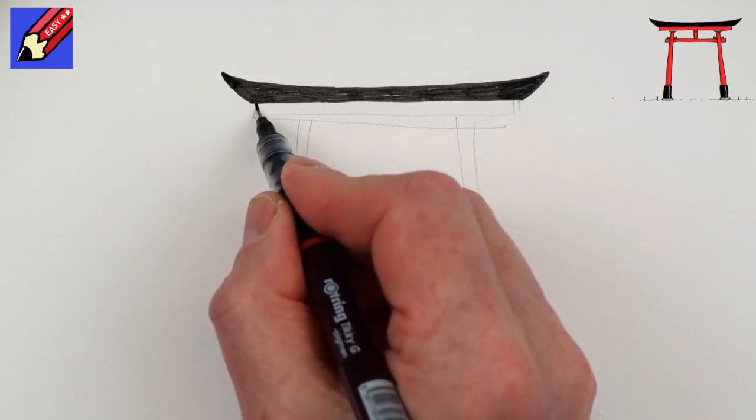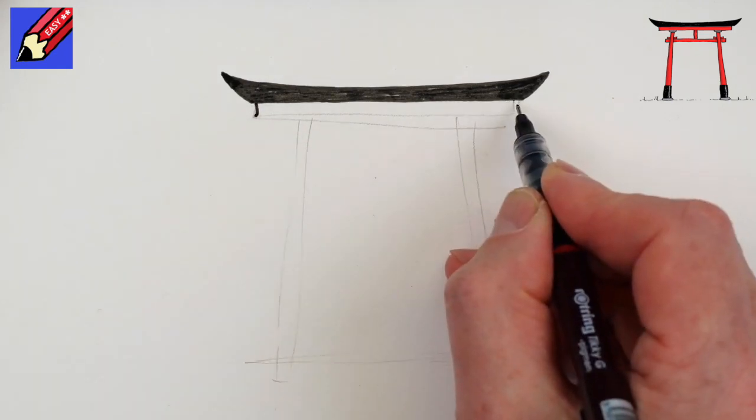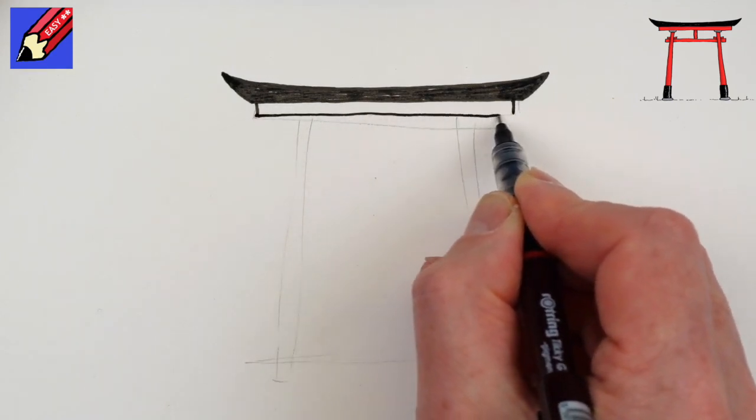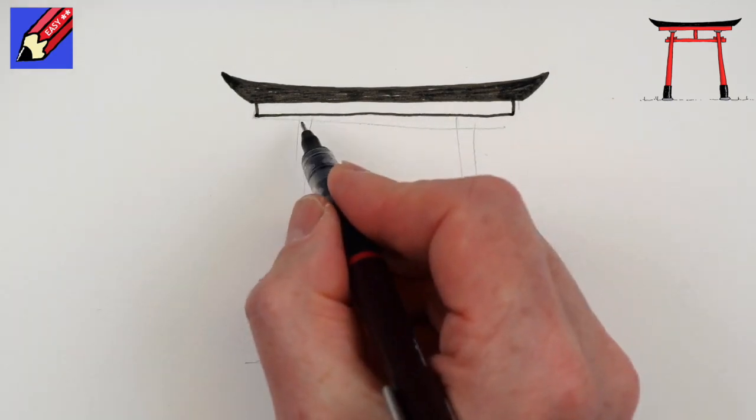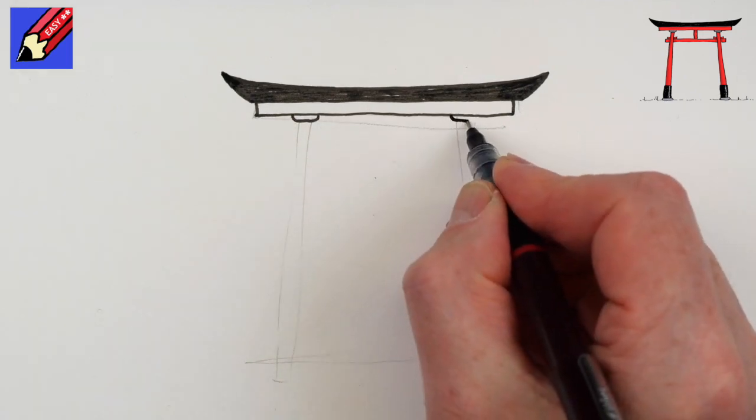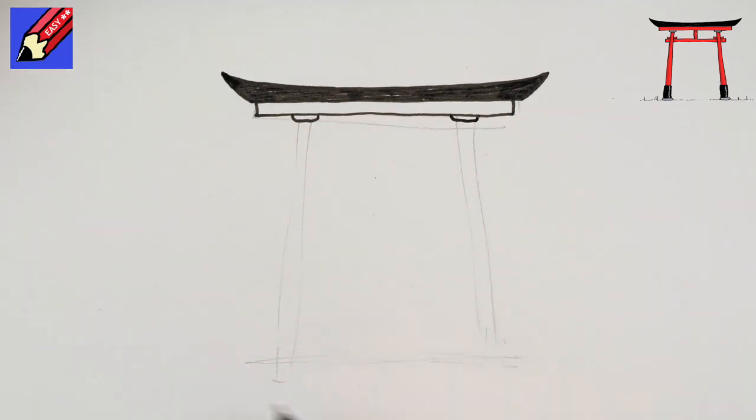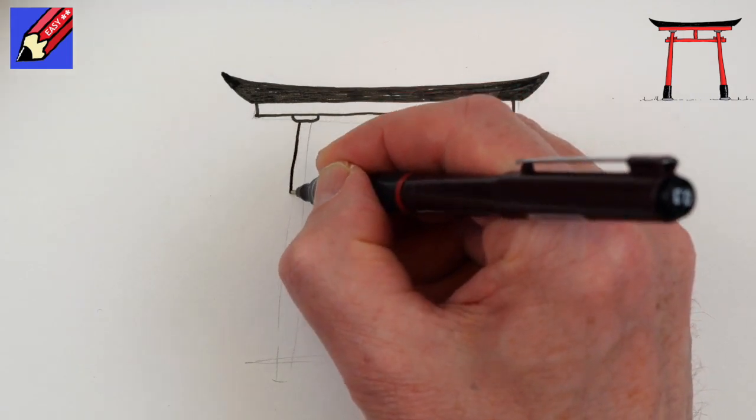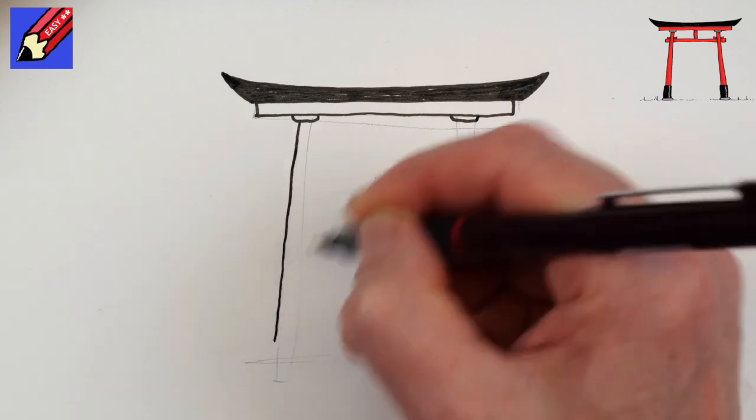Underneath that, we need a piece of timber that's going to be going across like that. And then each of these is going to want little bits up at the top of the columns. And then we can draw the columns coming down at a bit of an angle.